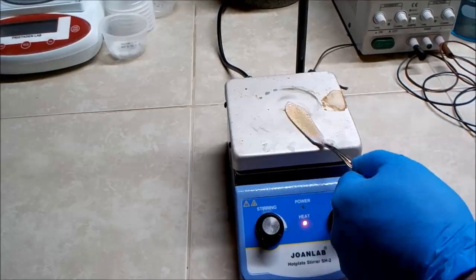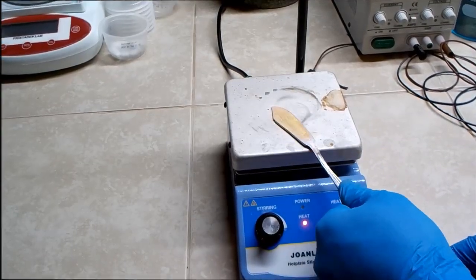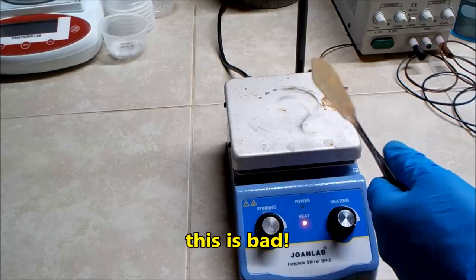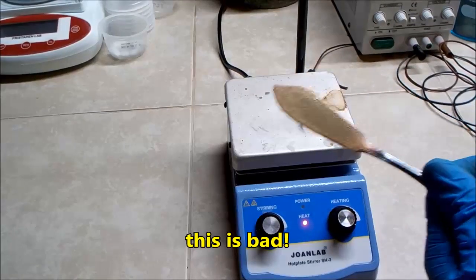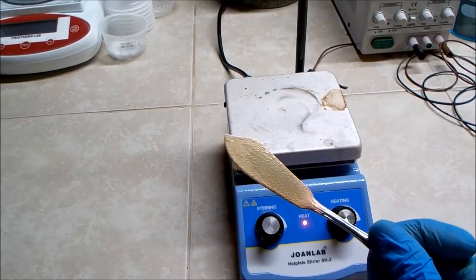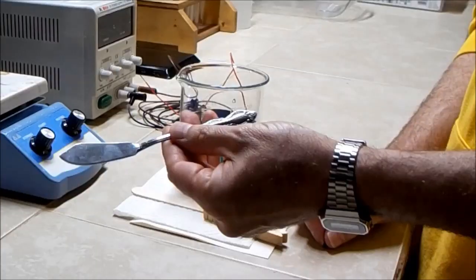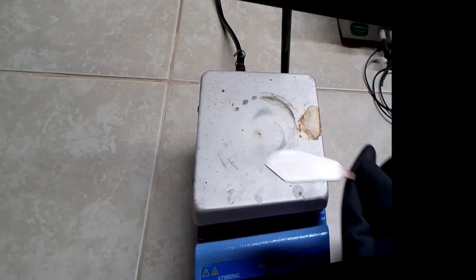Although I didn't capture it on video, I ended up starting over by scraping and sanding off everything I had plated onto the knife, then repeating the entire process including immersion of the knife in the hot copper chloride solution. I plated with copper for about 5 minutes then zinc for about 30 seconds.